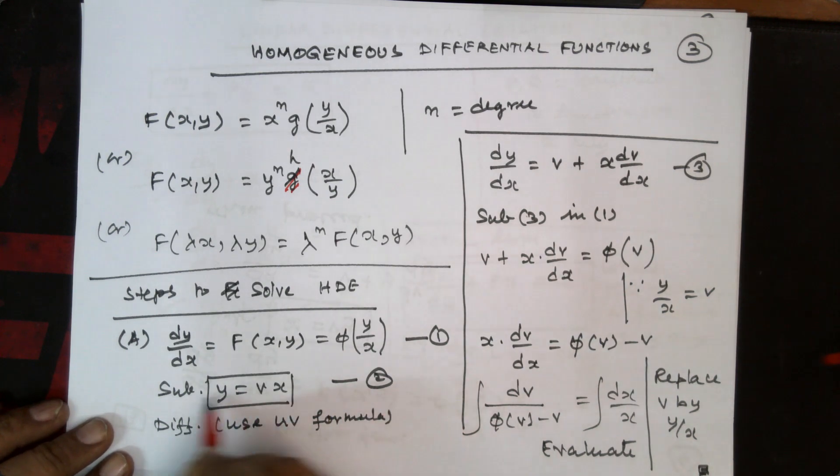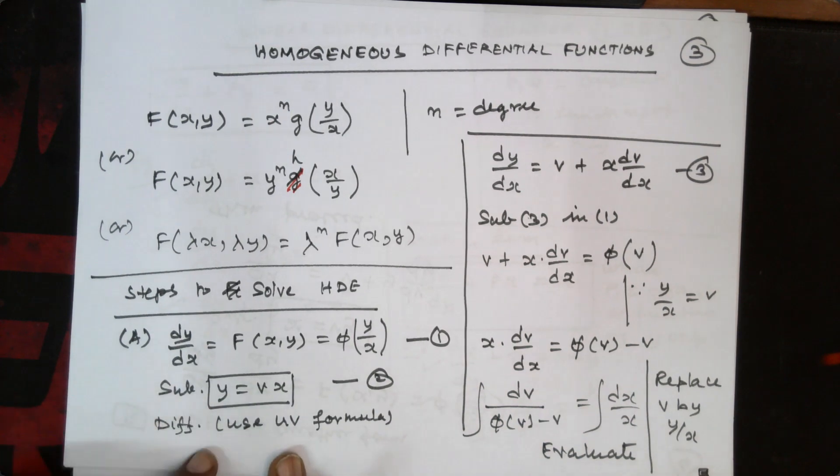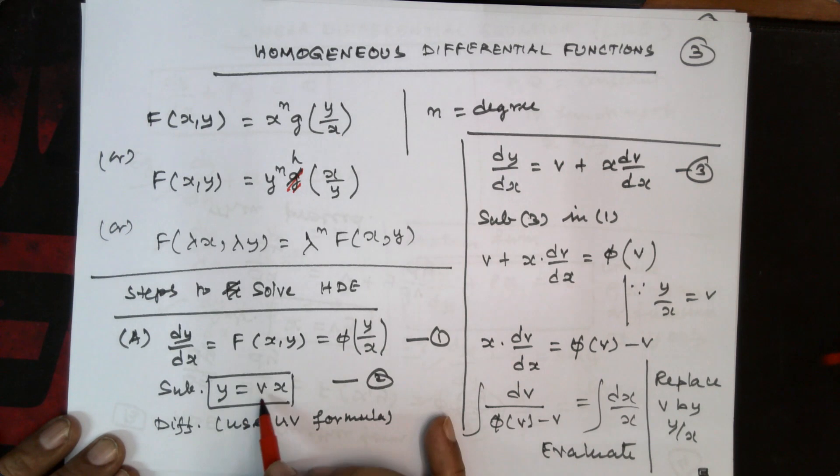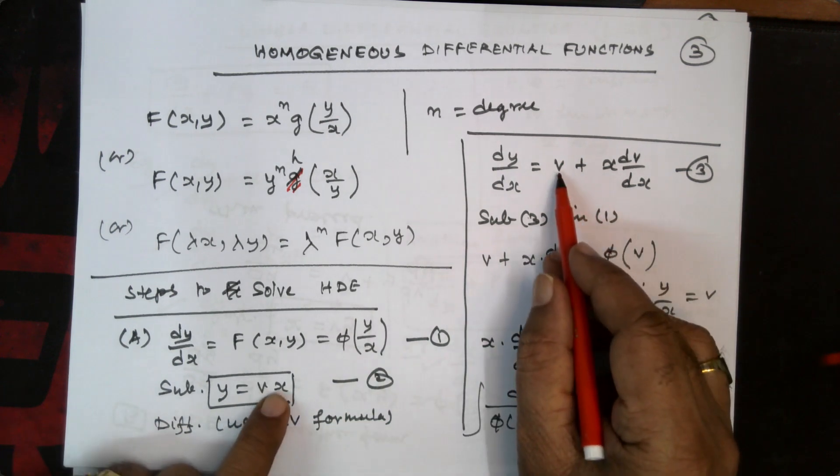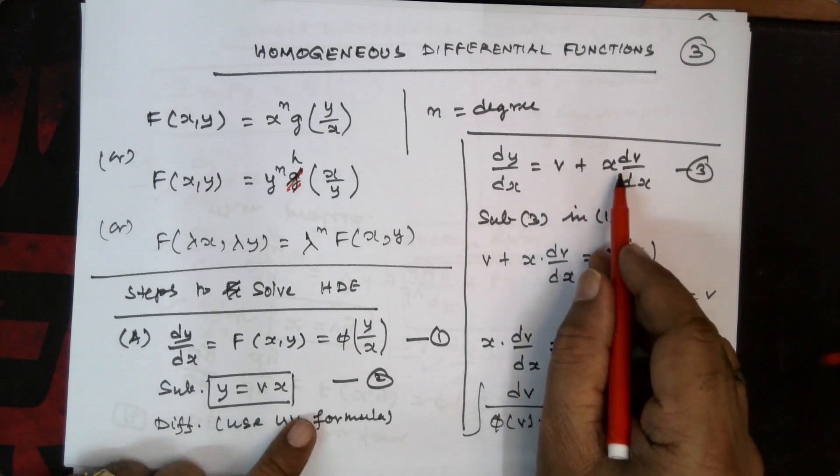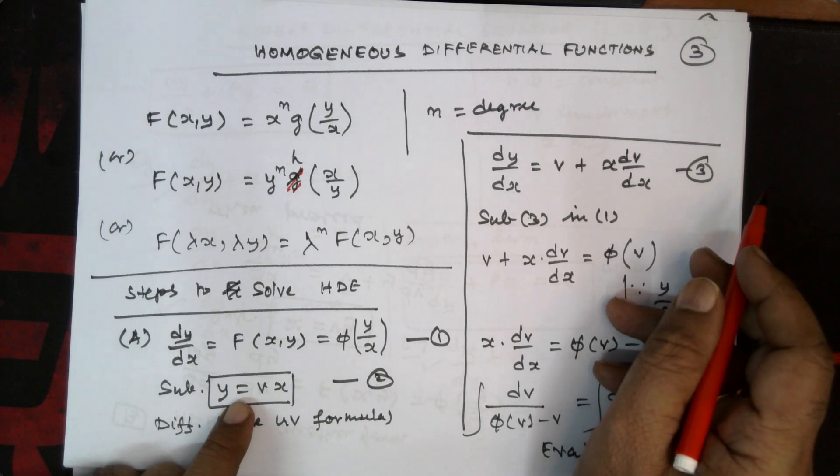So this is a very important step. Now what you are supposed to do, you have to differentiate this because this is in the uv form. So you can apply the uv formula, thereby dy by dx is equal to v, v with respect to x we are differentiating, so it becomes 1 and then vdu, that is x into dv by dx.